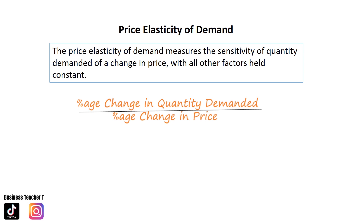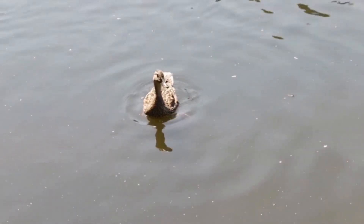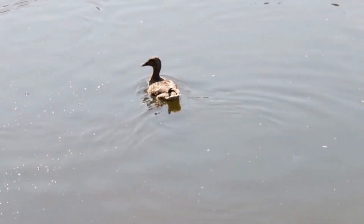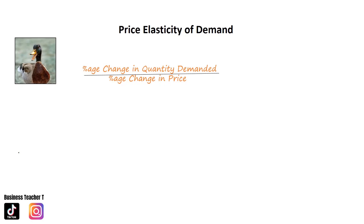Some students get muddled up with this equation, so here's a tip to help you remember it. The quacky duck sits on the pond. Think about the Q — quantity — going on top, because the quacky duck sits over the P, the price, which is the pond. Quacky duck sits on the pond.